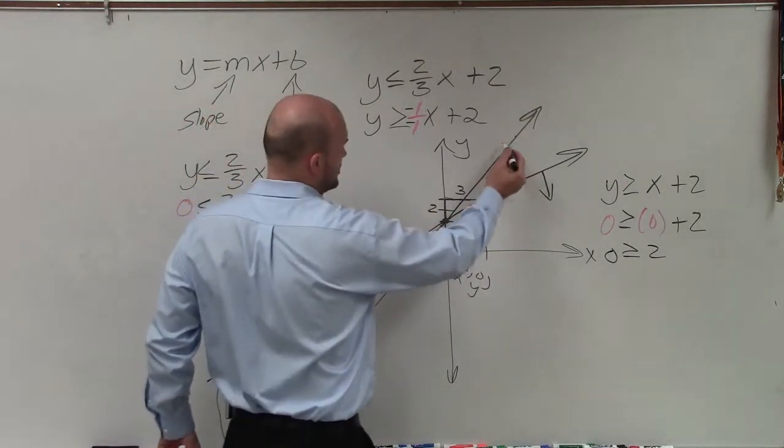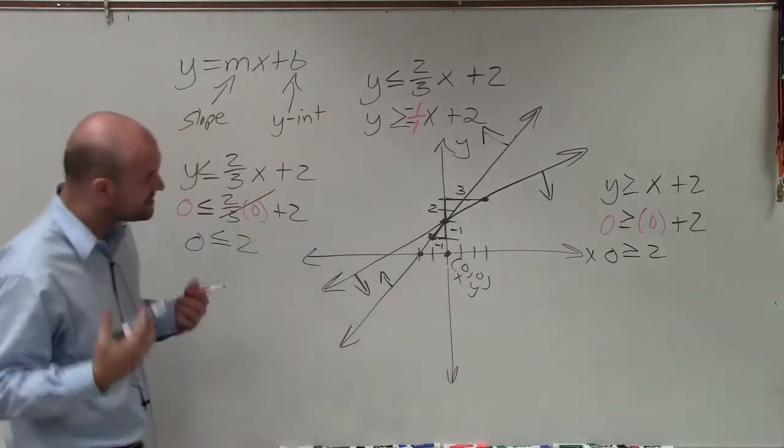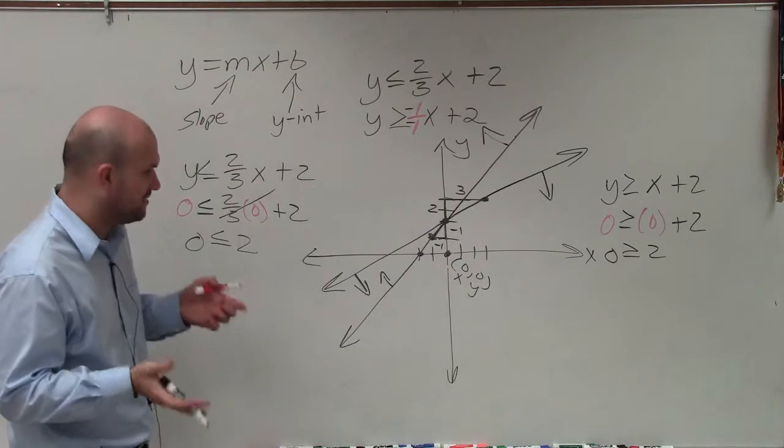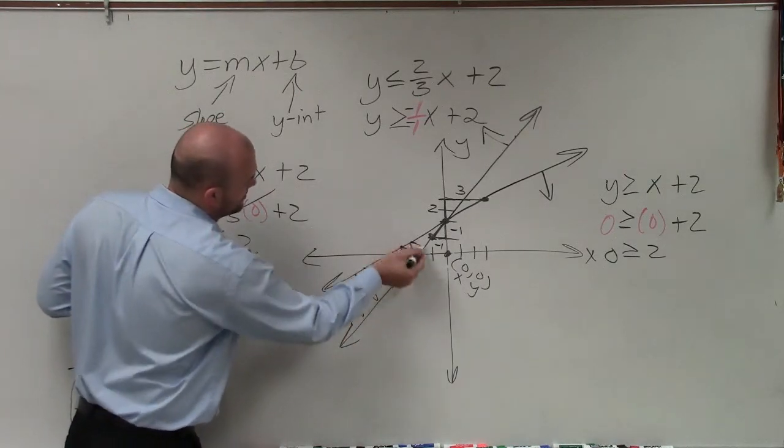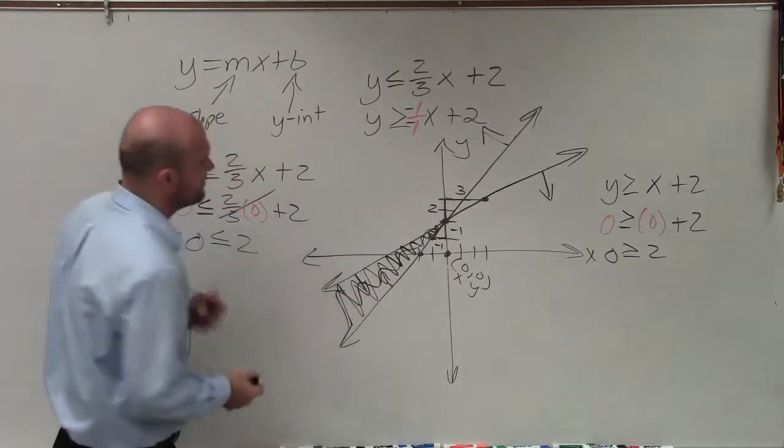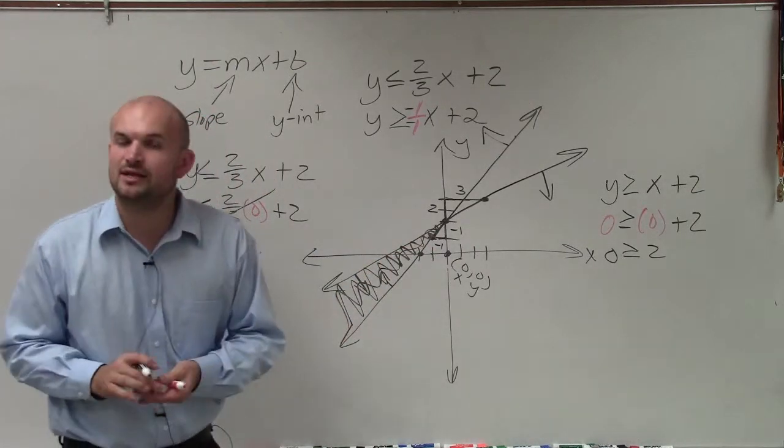That means I am going to shade above this line. And you can see that the only region where the shading of my inequalities intersect is going to be in between these two points. So I'm going to shade right there. That means the points that fall within this region are going to make both inequalities true.